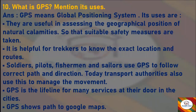Next question: what is GPS? Mention its uses. Answer: GPS means Global Positioning System. Its uses are: it is useful in assessing the geographical position of natural calamities so that suitable safety measures are taken. It is helpful for trekkers to know the exact location and routes. Soldiers, pilots, fishermen, and sailors use GPS to follow the correct path and direction. Transport authorities also use GPS to manage movement. GPS is the lifeline for many services delivered to your door in cities, and GPS provides directions through Google Maps.